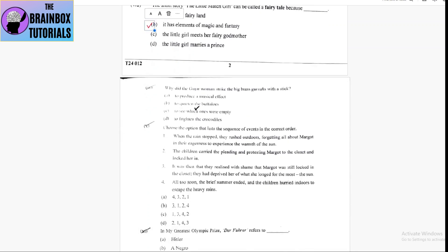Now number 9, why did the Gujar woman strike the big brass gharas with a stick? Number A, to produce a musical effect. Number B, to quieten the buffaloes. Number C, to see which ones were empty. Number D, to frighten the crocodiles. It is option D, to frighten the crocodiles.